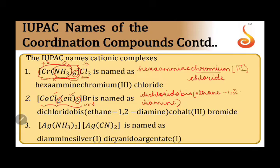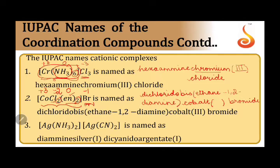Then comes the name of the central metal, which is cobalt. We will not be writing 'cobaltate' because it is not an anionic complex. The oxidation number is written next, followed by the anionic part: bromide. Chlorine has charge minus one, with two chlorines giving minus two. Ethane-1,2-diamine has zero charge. Bromide has charge minus one. To balance, cobalt must have oxidation number plus three, written as (III). Also note: with ammonia ligand we write double 'm' (ammine), but with ethane-1,2-diamine we write a single 'm' (amine).